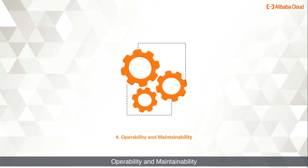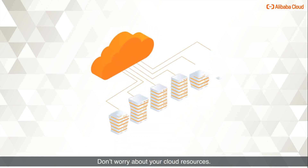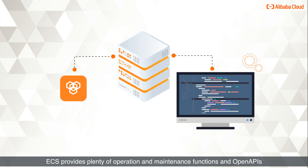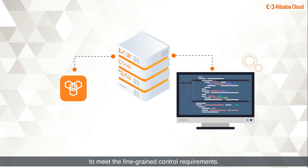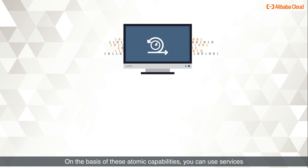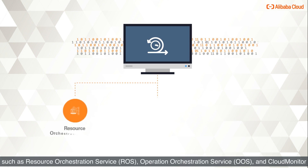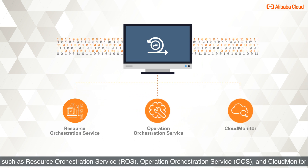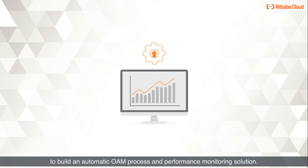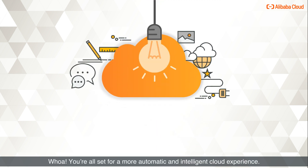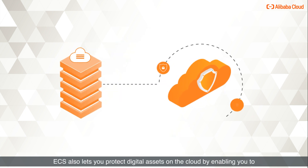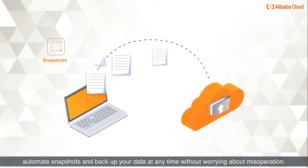Operability and Maintainability: ECS provides plenty of operation and maintenance functions and open APIs to meet fine-grained control requirements. On the basis of these atomic capabilities, you can use services such as resource orchestration service, operation orchestration service, and cloud monitor to build an automatic OAM process and performance monitoring solution. ECS also lets you protect digital assets by automating snapshots and backing up data at any time without worrying about misoperation.